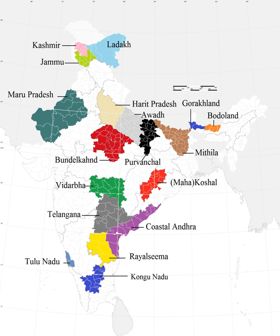This state or union territory could be named Tulu Nadu and Kodava Land. Jammu is part of the Indian state of Jammu and Kashmir. It is geographically separate from the Kashmir Valley and the Ladakh region. The Jammu division is inhabited by the Dagra people who speak the Dagri language.